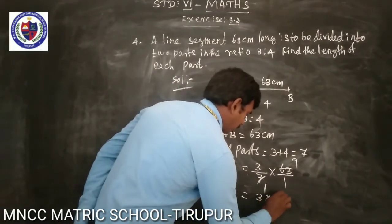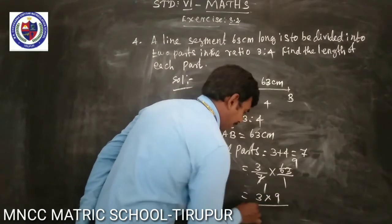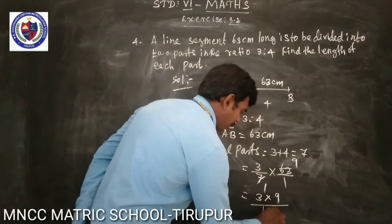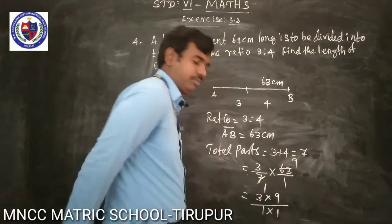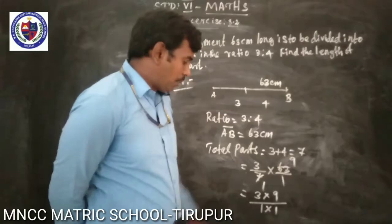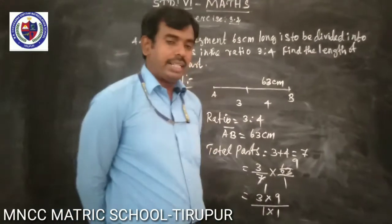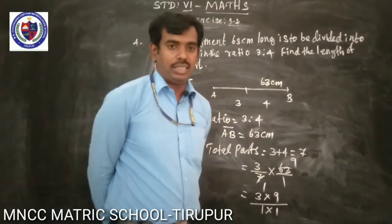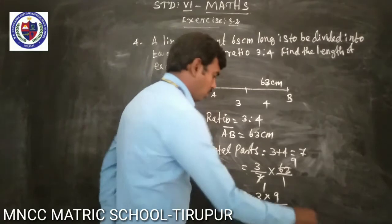So 3 multiplied by 9 equals 27. The first part is 27 cm.